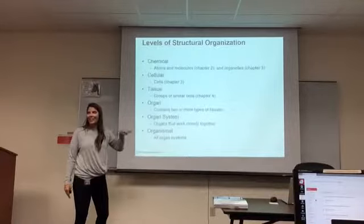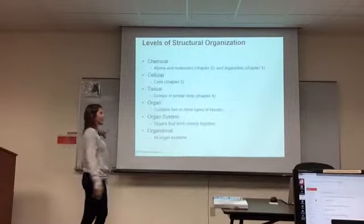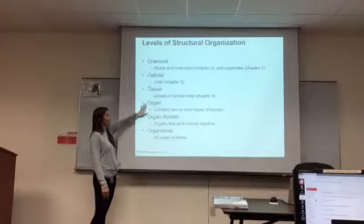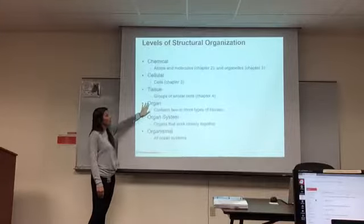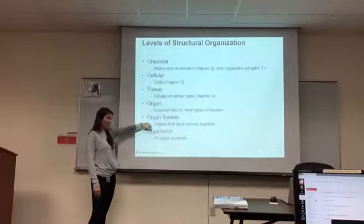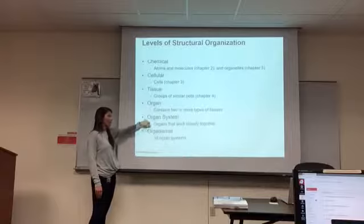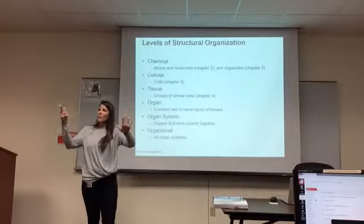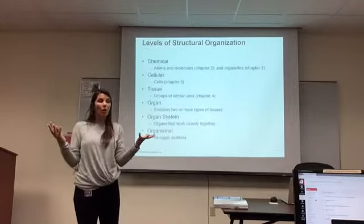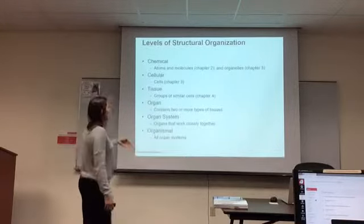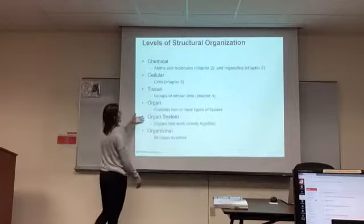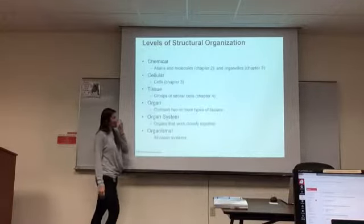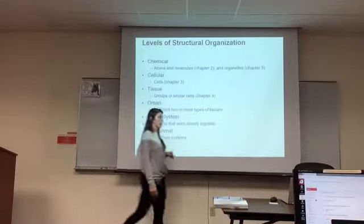A group of tissues makes an organ. Multiple organs working together form an organ system. You have 11 organ systems — unless you're a hermaphrodite, then you have 12. All organ systems working together compose an organism.